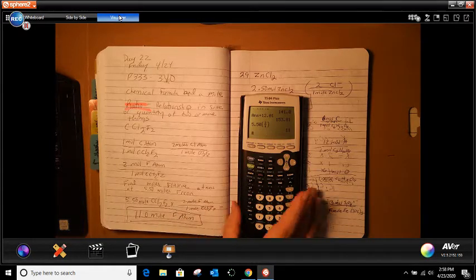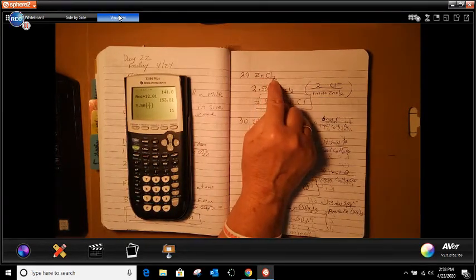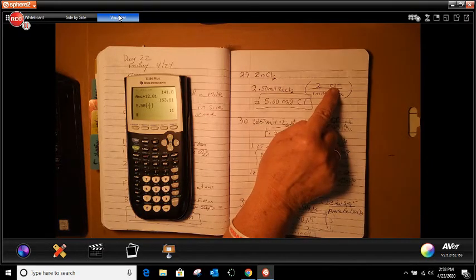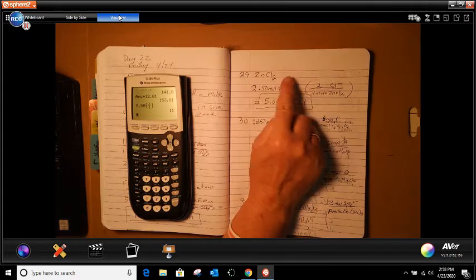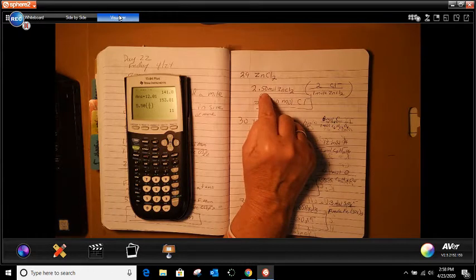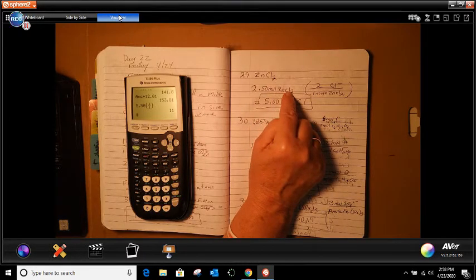So let's look at 29. 29 gives us ZnCl2. But the question asked us for chlorine is the only thing we need to find. See the subscript of 2. That means that's how many there is.